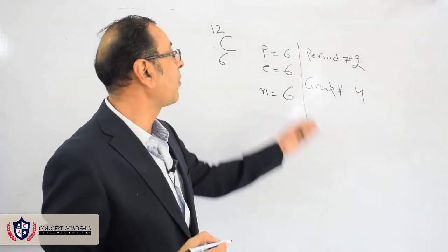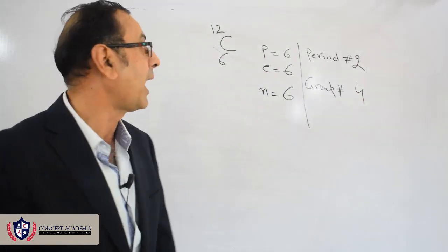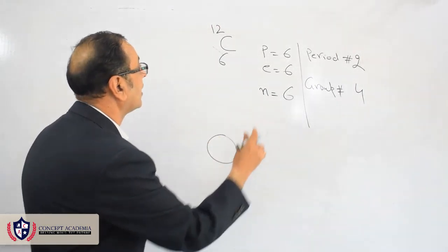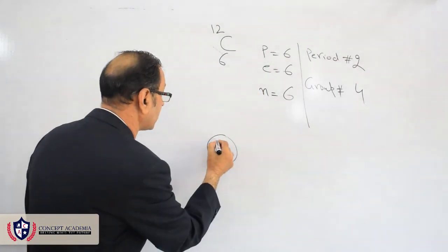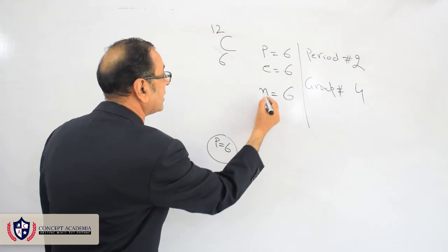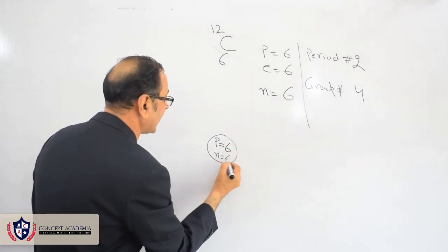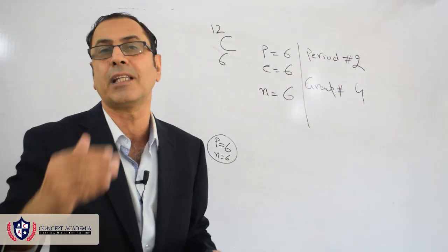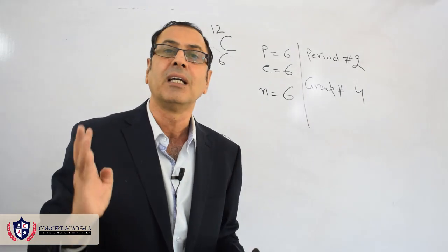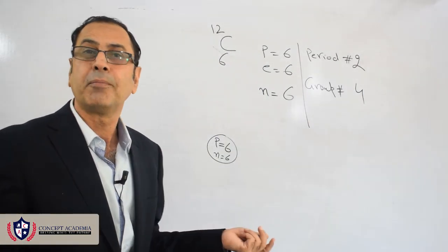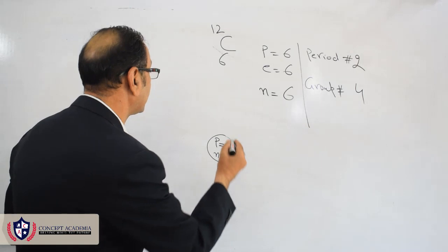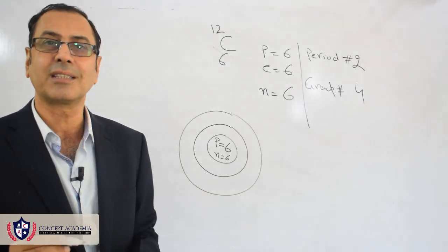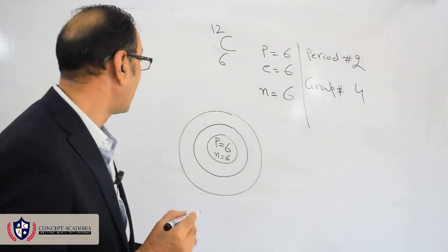The first priority is given to the period number, which tells us the number of shells. If I draw the nucleus — which contains protons and neutrons, 6 protons and 6 neutrons in the case of carbon — the period number is two, so we should draw two shells around the nucleus of carbon.